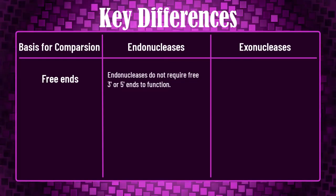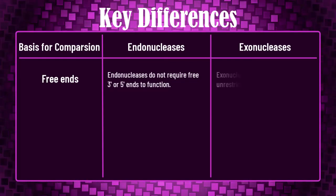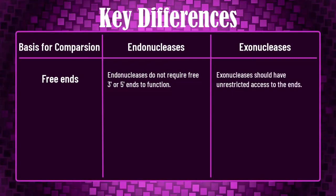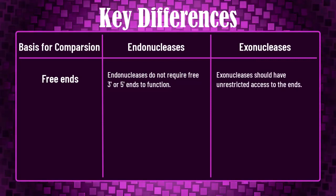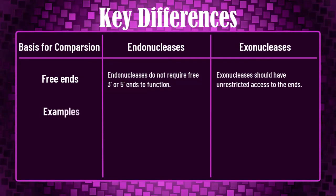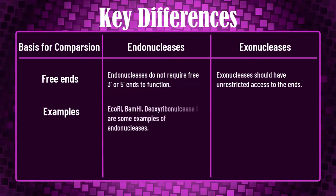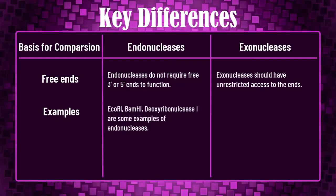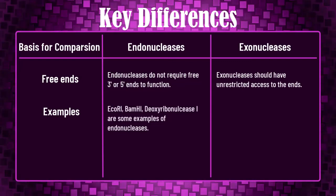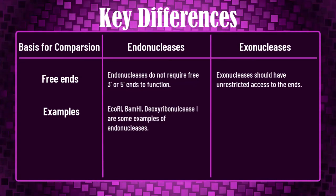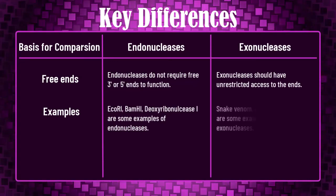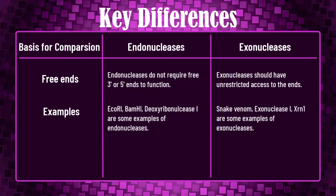Regarding free ends: endonucleases do not require free 3-prime or 5-prime ends to function, whereas exonucleases should have unrestricted free ends. Some examples of endonucleases are EcoR1, BamH1, and deoxyribonuclease I; whereas snake venom exonuclease and XRN1 are some examples of exonucleases.